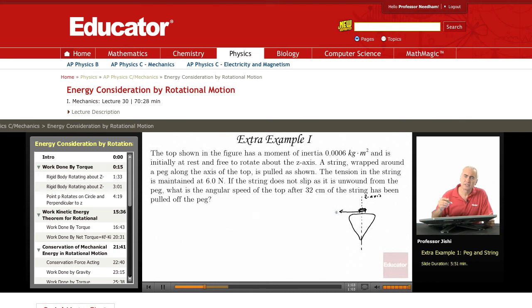The string is maintained at 6 newtons, so we have a force here pulling which is 6 newtons. If the string does not slip as it is unwound from the peg, what is the angular speed of the top after 32 centimeters of string has been pulled? So you're pulling and you're just applying a constant force, and you pull 32 centimeters.